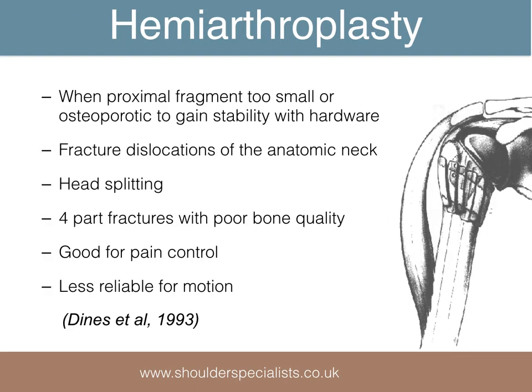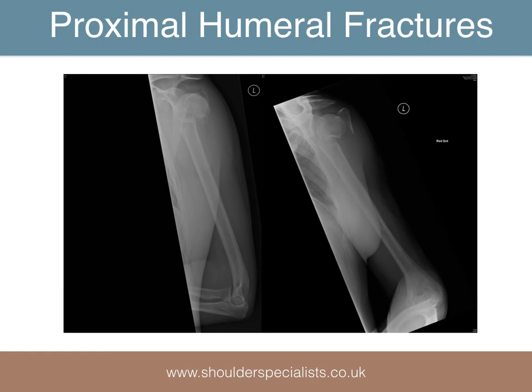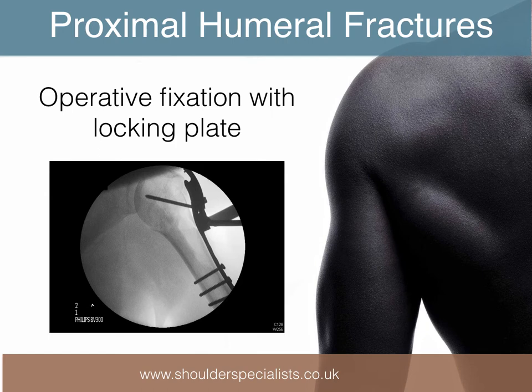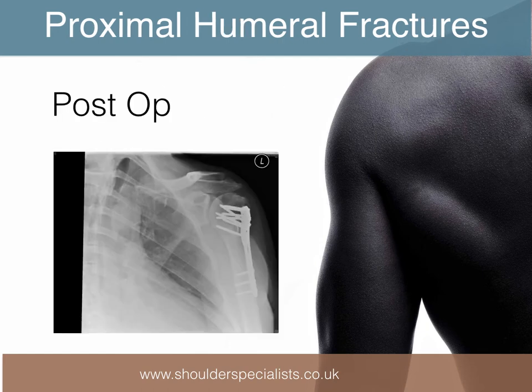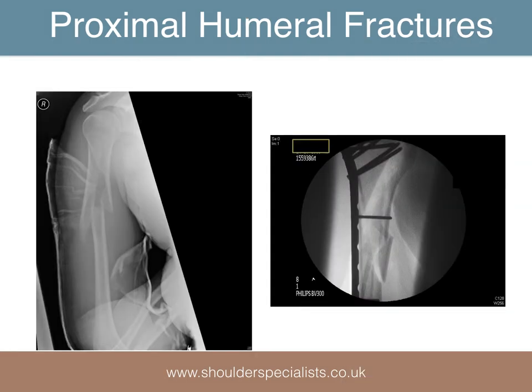Sometimes however, the fracture pattern may dictate that a hemiarthroplasty is the preferred option, such as in fractures which split the head, or in displaced four-part fractures with poor bone quality. Here is an example of a displaced proximal humeral fracture which we fixed with a locking plate. Here are the postoperative radiographs. A similar technique can be used for fractures also involving the shaft of the humerus, as in this example.